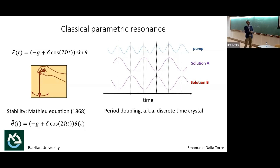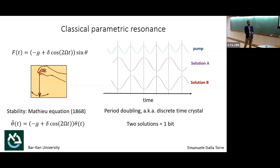What you find is essentially two solutions. These two solutions have a period that is double the period of the drive — that's why you have two, because a symmetry is broken. It's called period doubling, also called discrete time crystal. Please don't ask whether it is a time crystal — it's not the topic here. What is important is that when you have two solutions, it is natural to think of it as a bit.